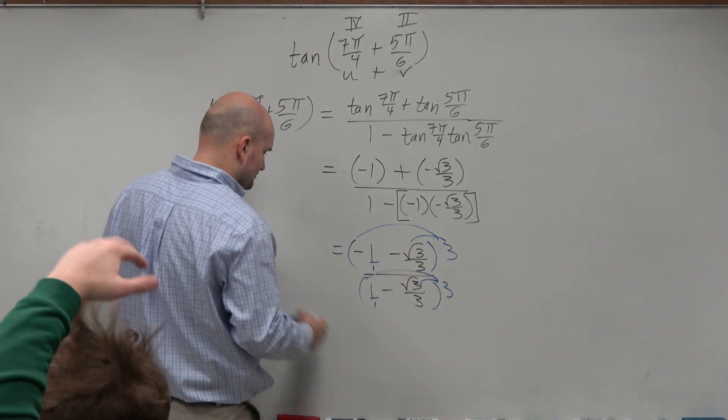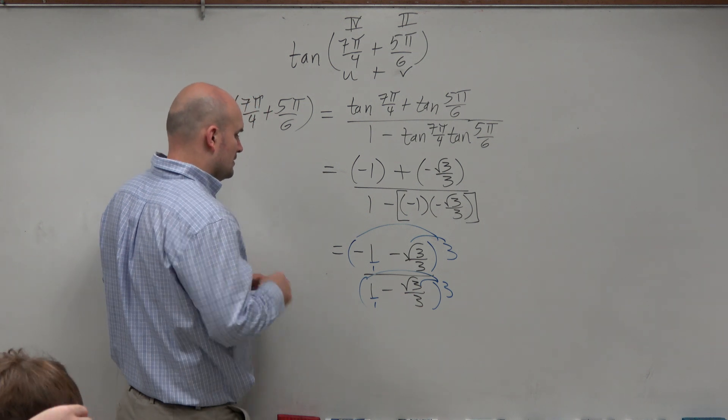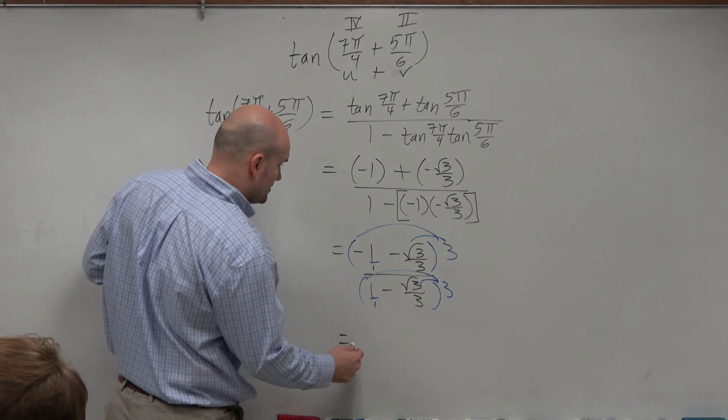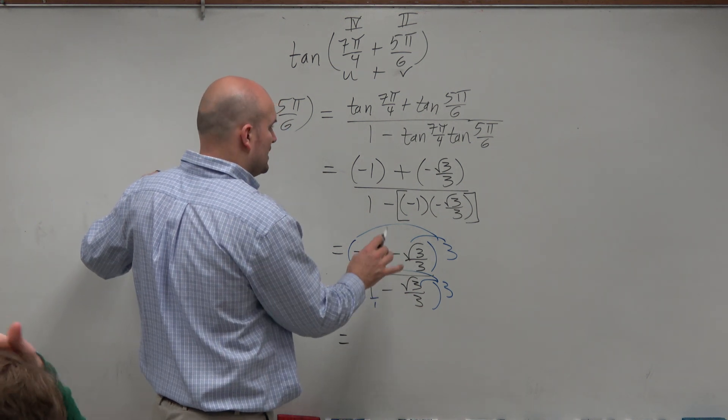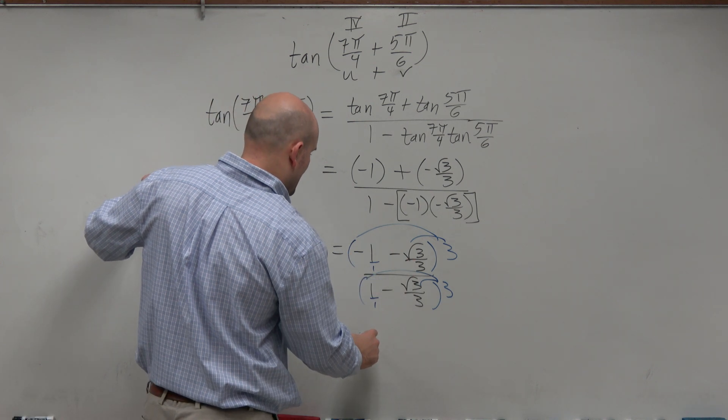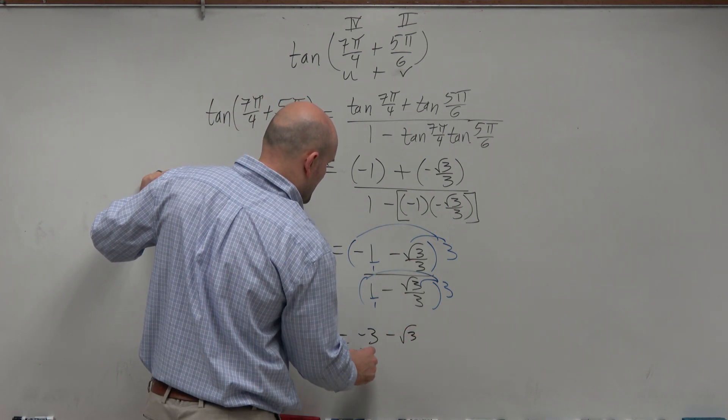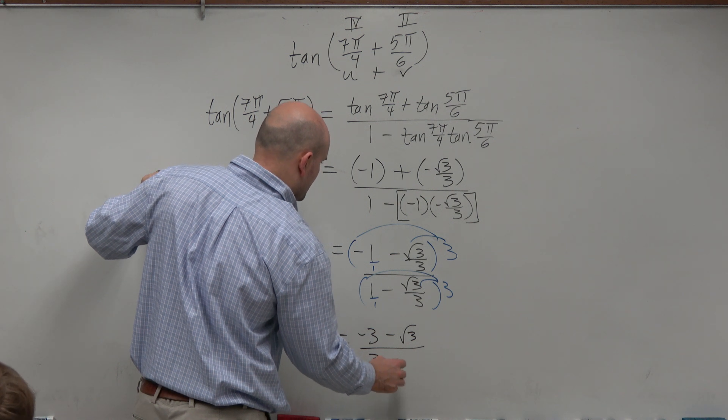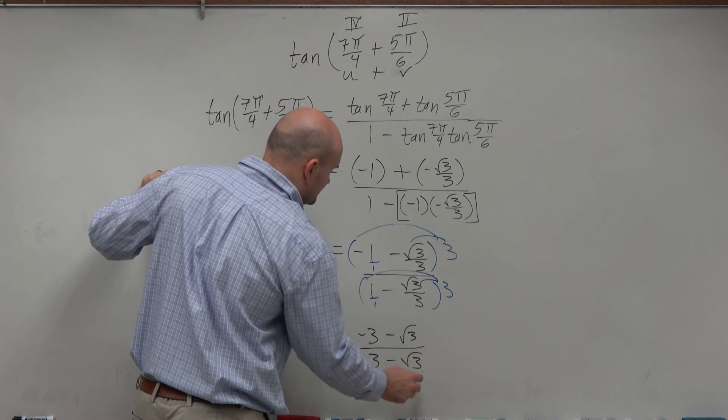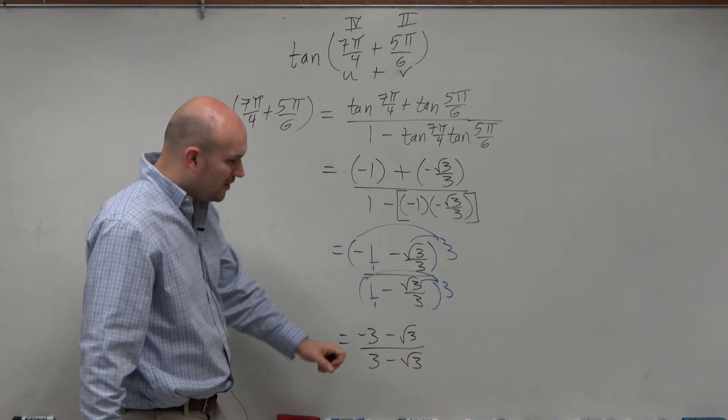When doing that, I now get a negative 3 minus the square root of 3 all over 3 minus the square root of 3.